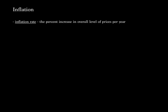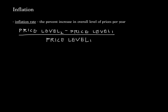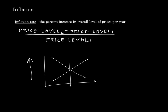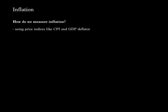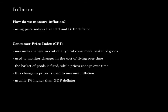On to inflation. The inflation rate is the percent increase in the overall level of prices per year. We write this as price level 2 minus price level 1, all over price level 1. In the aggregate model, inflation is represented by an increase in price level. We measure inflation using price indices like CPI and GDP deflator.